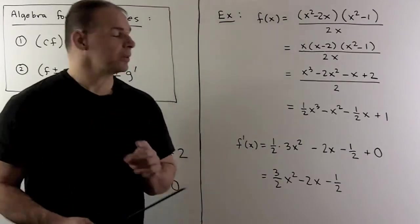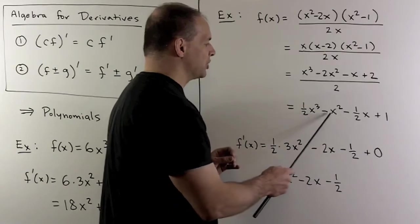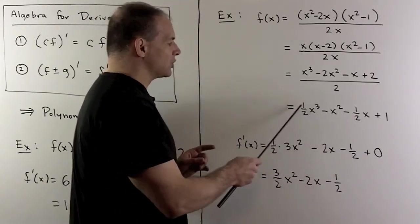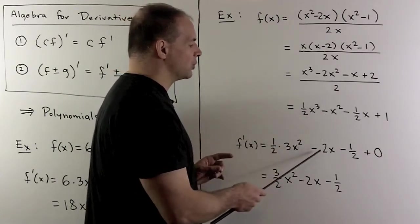Rules from before apply. So I'm just going to apply derivatives to each term. Then, we'll just pull each constant out. So I pull out the 1 half, derivative of x cubed is 3x squared. Pull out the minus sign, derivative of x squared is 2x.